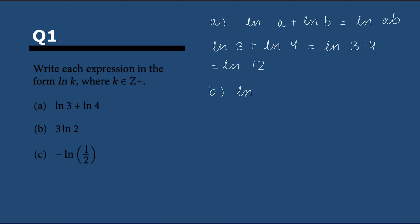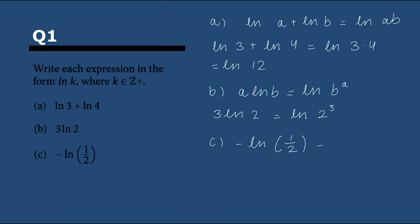The second one, we're using another rule, which is that if we have a number multiplying a logarithm, we can put it as an exponent. So in this case, 3 ln 2 becomes ln 2 to the power of 3, which we can simplify to ln 8 if you want to. Then we have minus ln(1/2), which we apply the same rule to — the power of minus 1 — which then becomes ln 2.